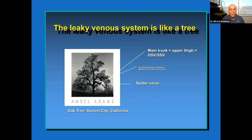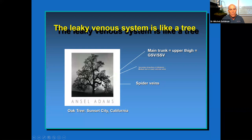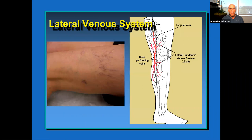I use a photograph by Ansel Adams of an oak tree to explain the concept. Some branches are hiding the sunset, so the question is: how do you get a nice view while keeping the tree? You could cut the whole tree down — that's like the main trunk of varicose veins — or cut just a branch. Most commonly, people just take off the leaves, but the tree keeps growing back. It's important to cut it down in the right location, and we do the same with veins.